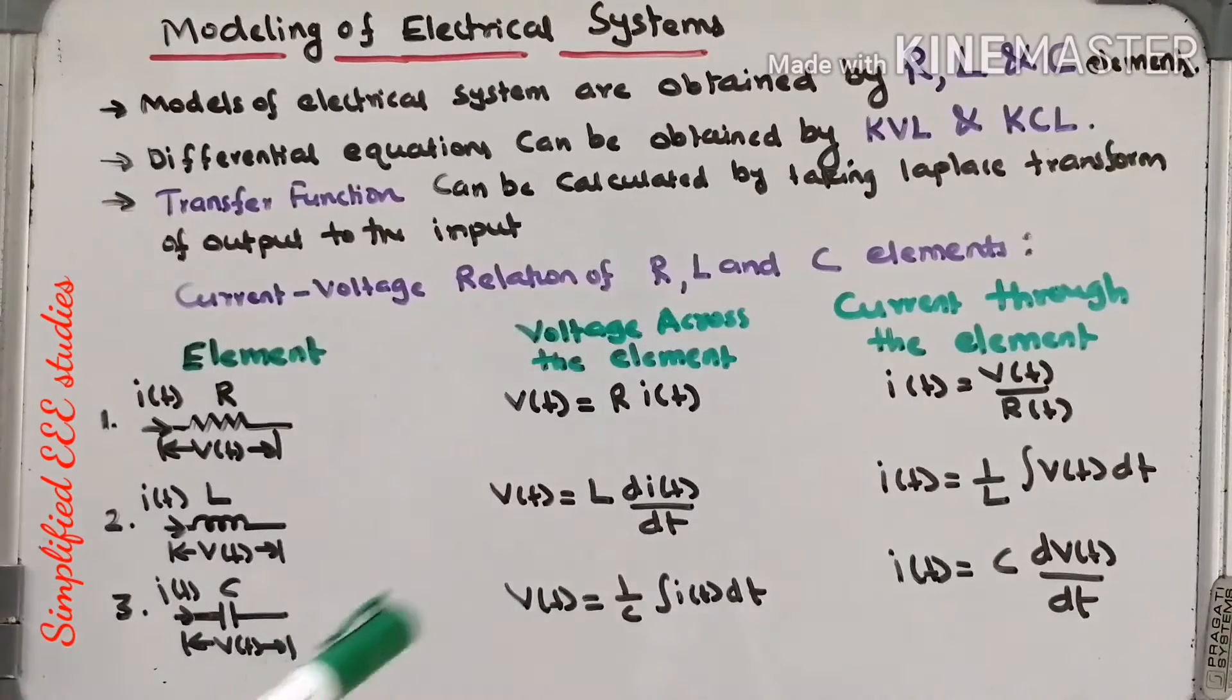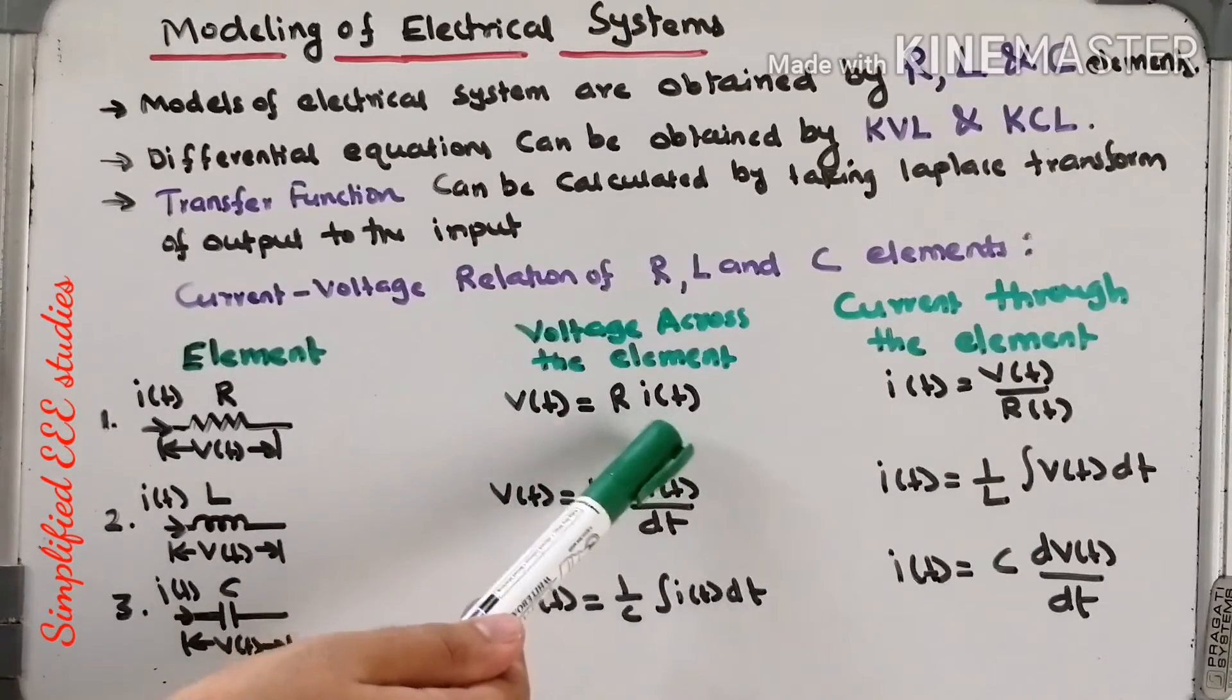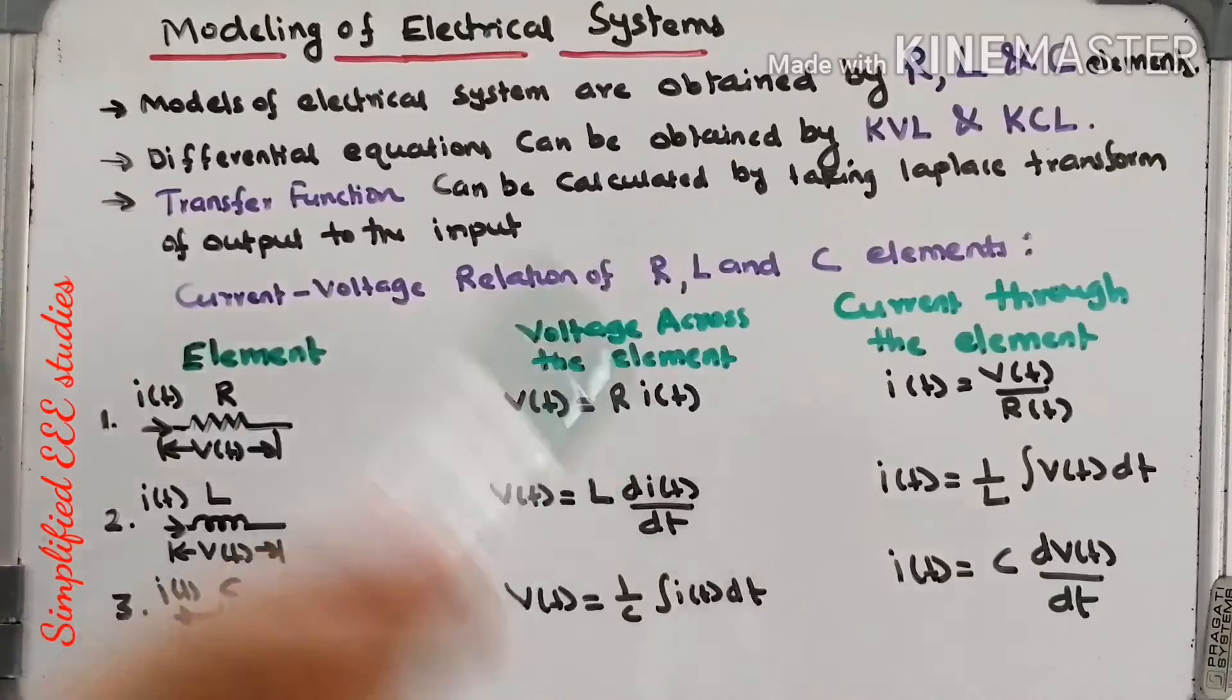Let us see the table which I have given for you. First element is resistor. Voltage across resistor is V(t) and current through the resistor is I(t). By applying Ohm's law, you can write that V(t) is given by R into I(t), where R is a resistive element.